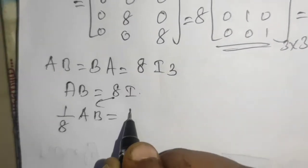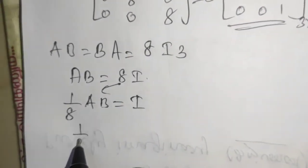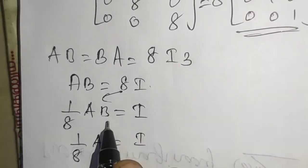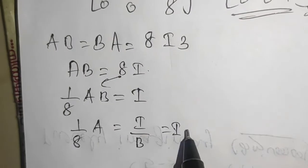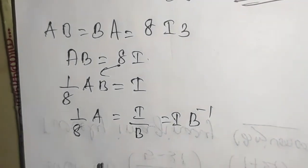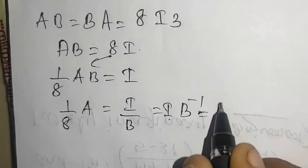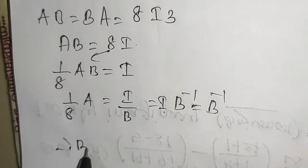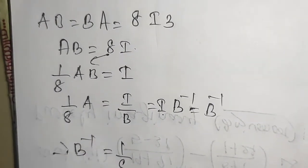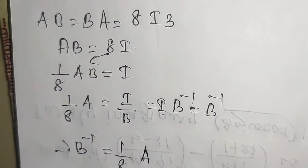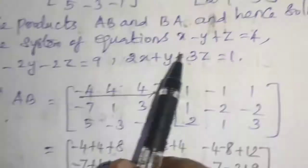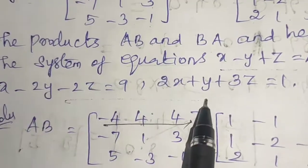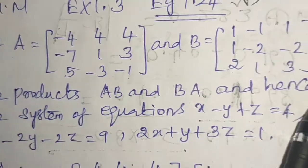So 1 by 8 into AB is equal to I. This is equal to I times B inverse, which equals B inverse. Therefore, B inverse is 1 by 8 into A.